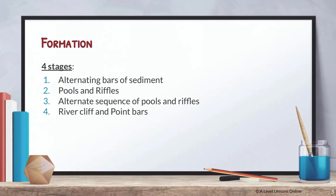The meandering river has four stages, similar to the braided river. With the braided river, we learned that it requires a seasonal climate. The four stages of the braided river are basically high-low-high-low. For the meandering river, the four stages are slightly harder to remember because they're based off certain features. Stage one is alternating bars of sediment. Stage two is the development of pools and riffles. Stage three is an alternate sequence of pools and riffles. Stage four is the formation of river cliffs and point bars — the key features of a meandering river.